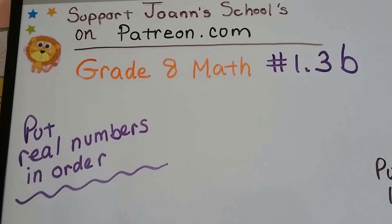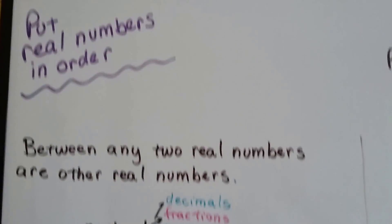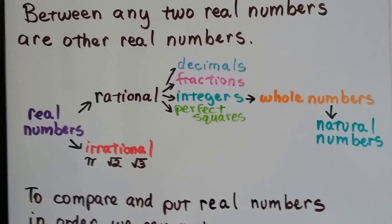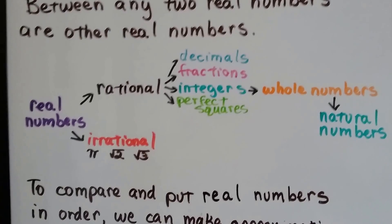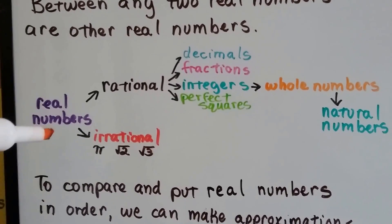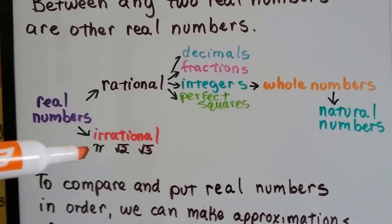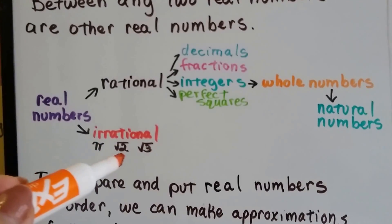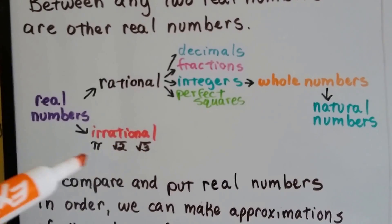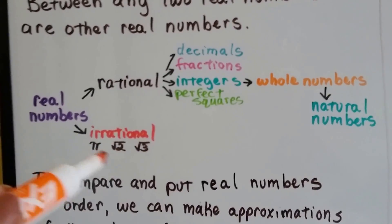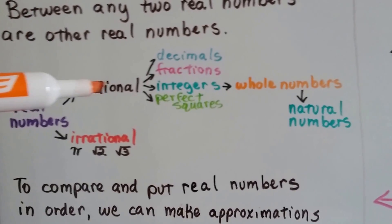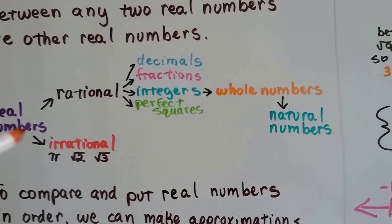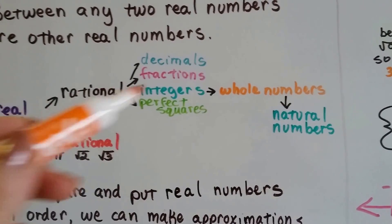Grade 8 math, number 1.3b: put real numbers in order. Between any two real numbers are other real numbers. As we saw in a previous video when we broke them into a tree, real numbers break off to either rational or irrational numbers. That's the end of the line for the irrational numbers — it's the only thing on this branch: pi, square root of 2, square root of 3, the square roots that are not perfect square roots. For the rational numbers, that's everything else.